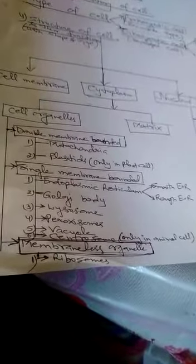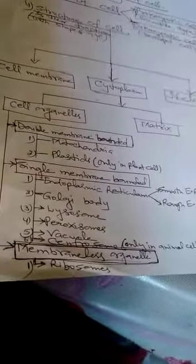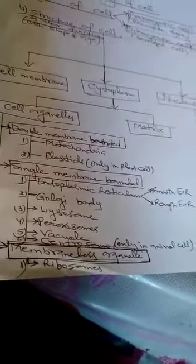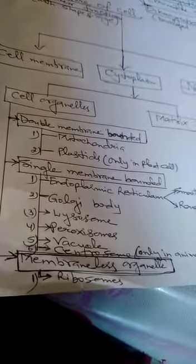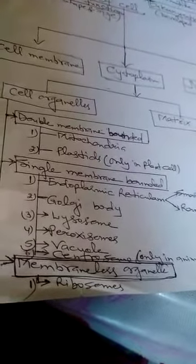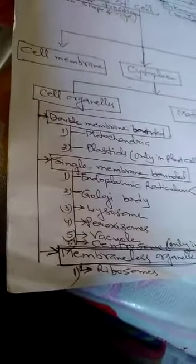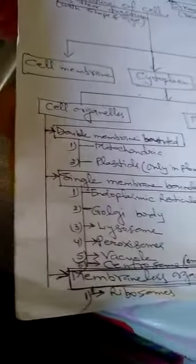Then, cell membrane is the outer covering of the animal cell and in plant cell, it again bounded by cell wall. So, that allows materials to come inside or outside according to the need of cell. That function is very important.